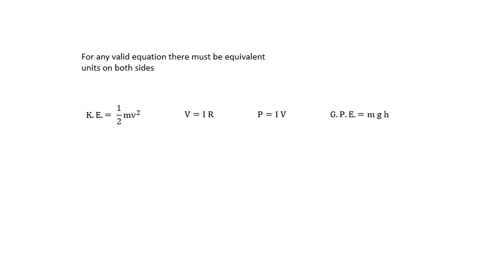Interestingly, for any valid equation, for any equation which is actually true, there must be equivalent units on both sides. If you go to university and do physics or engineering, or further maths, you'll do something called dimensional analysis, which is basically what I'm talking about here. If you've got an equation, you have to have the same or equivalent units on both sides, the same base units on both sides.